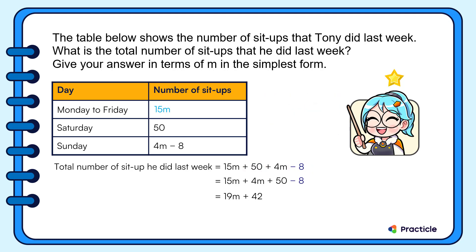After adding the terms and numbers correctly, you'll be rewarded with the answer. The total number of sit-ups that Tony did last week is 19M plus 42.